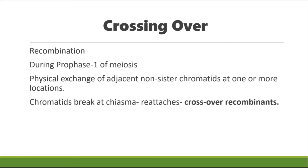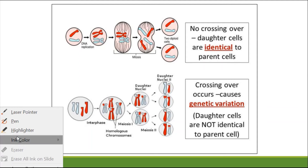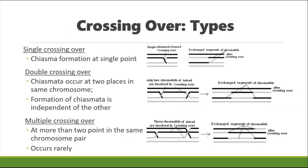The chromatids that result from the interchange of segments are called crossover recombinants, while the chromatids that remain intact are called non-crossover parental chromatids. As shown in this diagram, when there is no crossing over, the daughter cells are identical to the parent cells. When chromatid arms are exchanged during meiosis, the daughter nuclei are not identical to the parent cells, indicating crossing over has taken place and genetic variation has occurred.